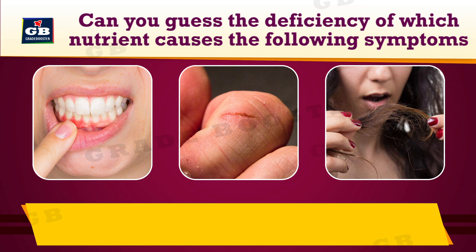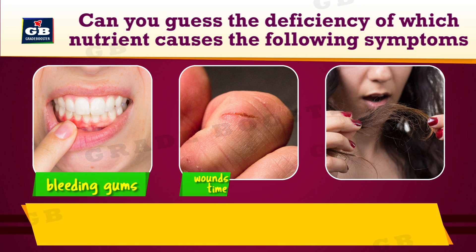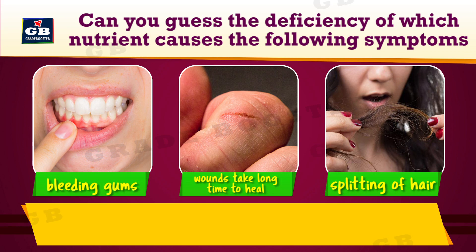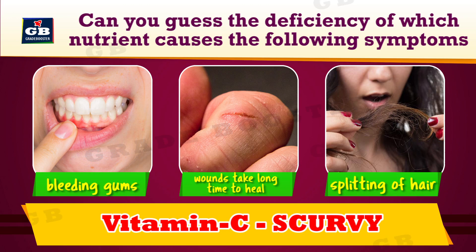Didn't you get it? Okay, I will give you the clues: bleeding gums, wounds taking long time to heal, splitting of hair. It is vitamin C. The deficiency of vitamin C leads to a condition called scurvy.